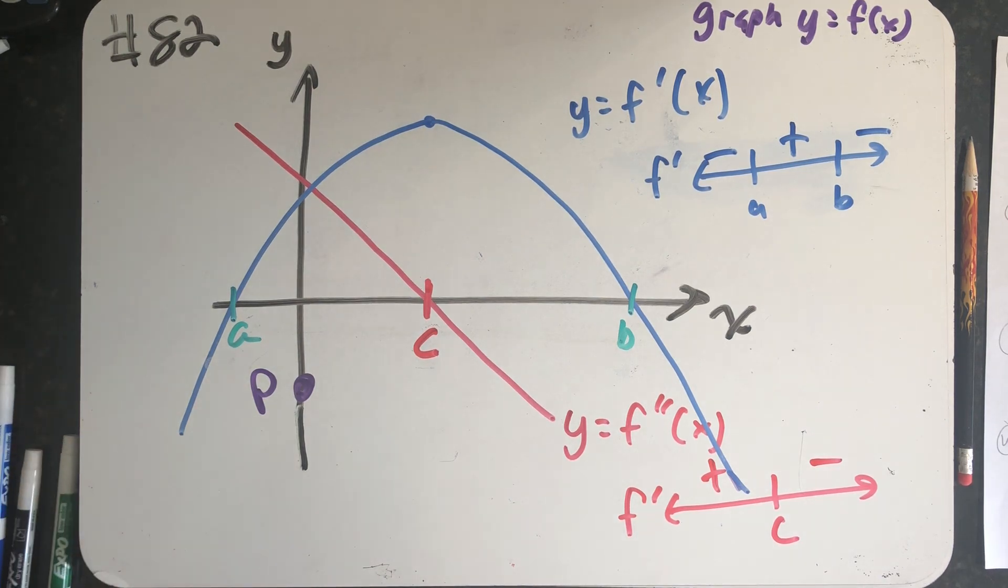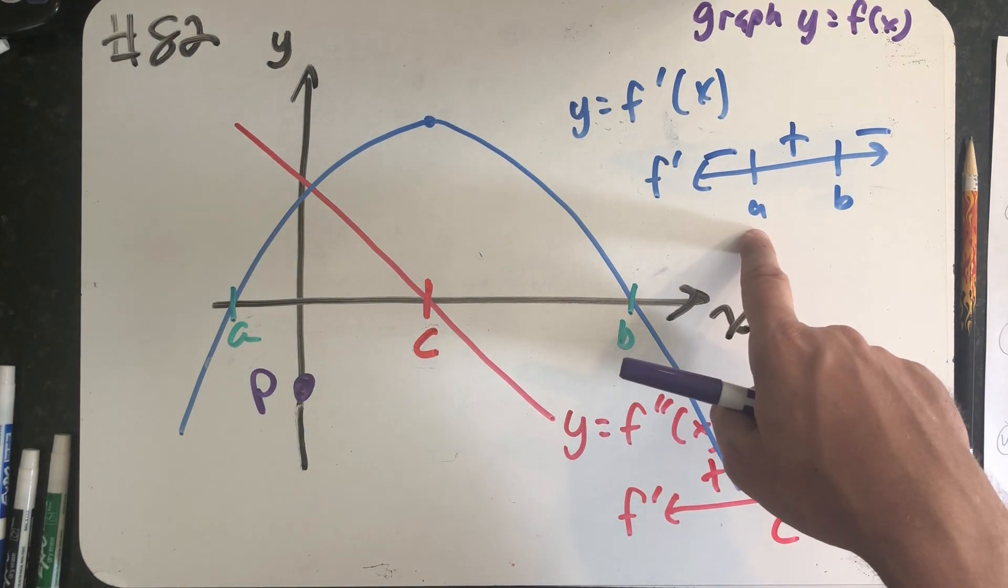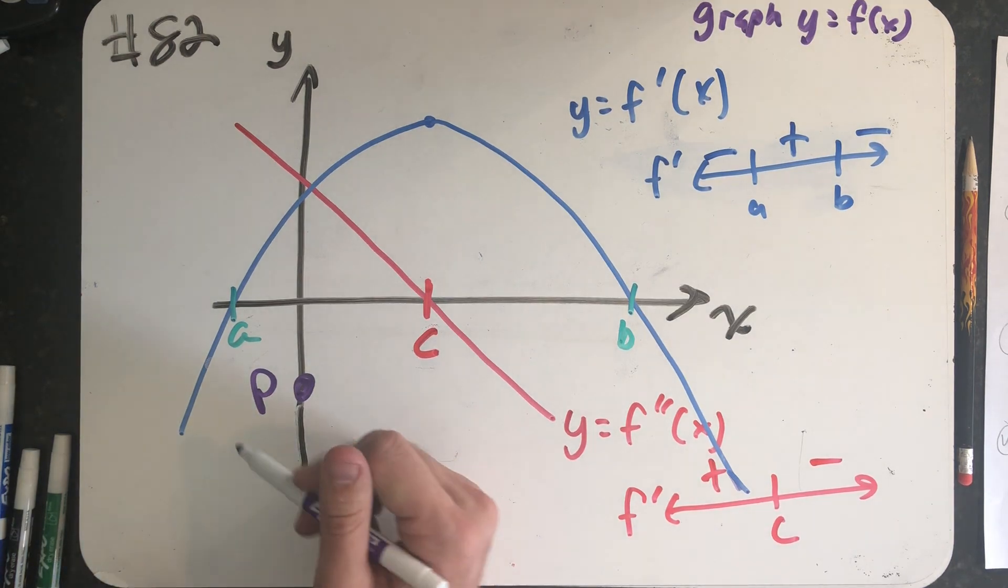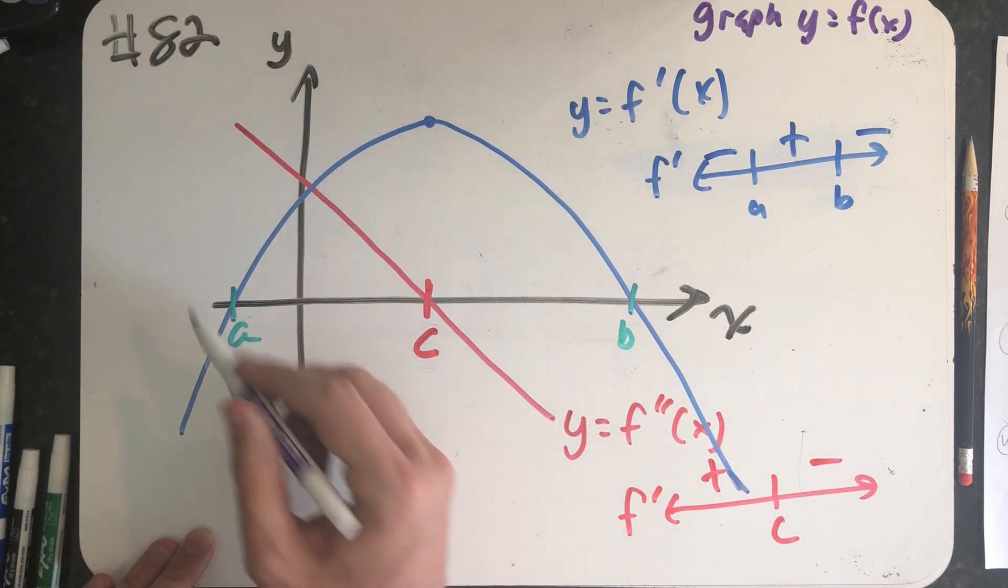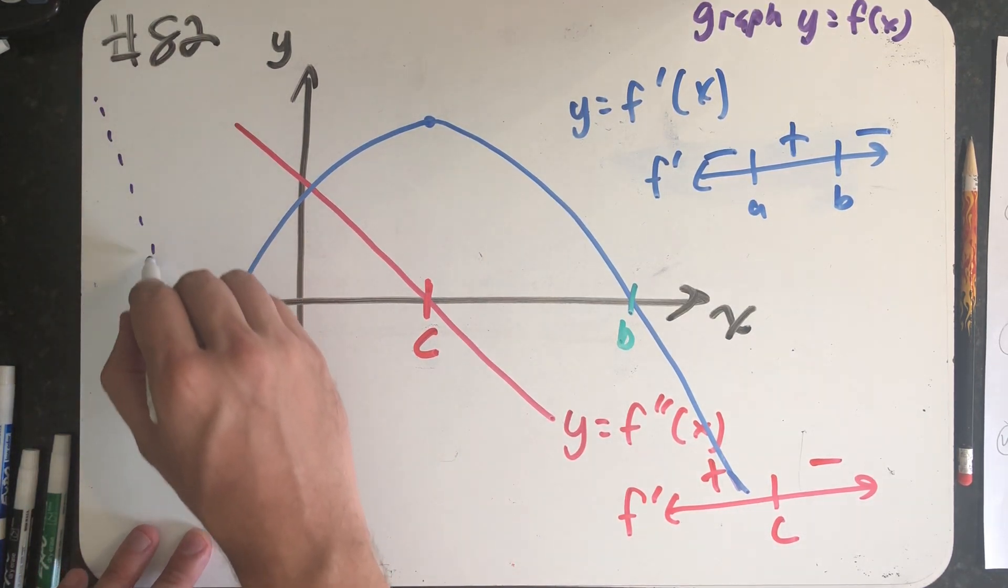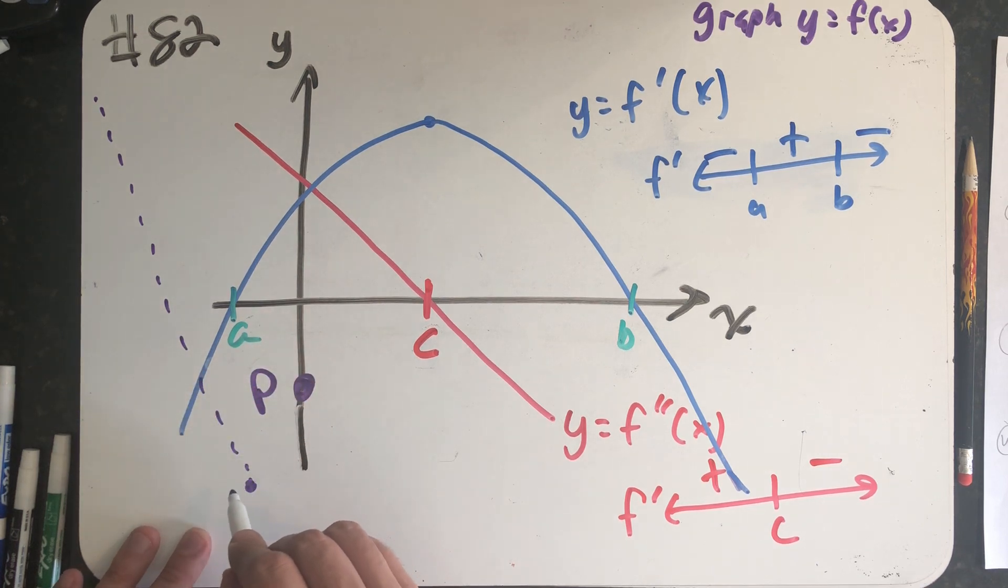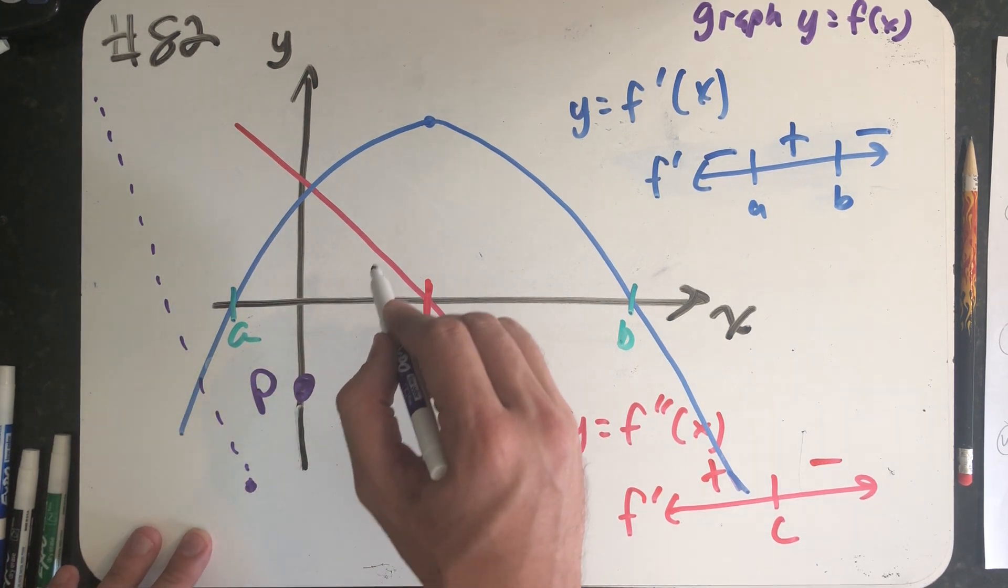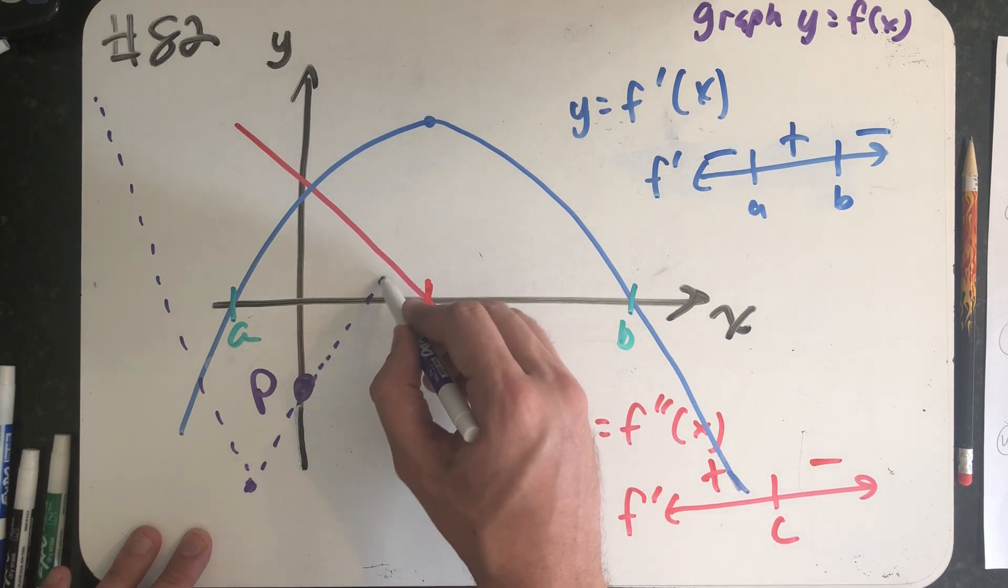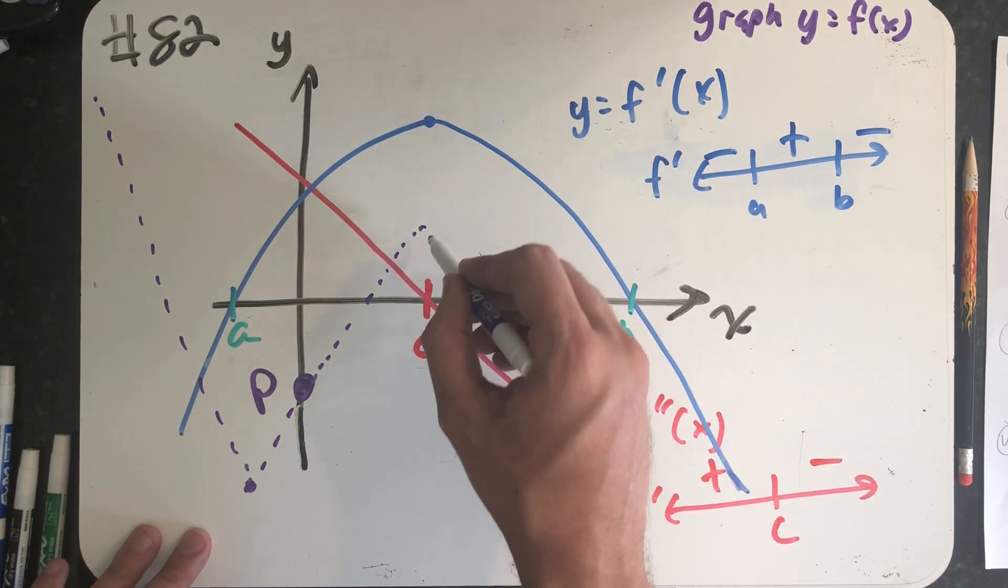So let's see if I can sketch the graph of y equals f of x. Let's just think about it in the most boring way. I have to decrease until I get to a and then go through the point p. So I think my graph of f of x will have to decrease until I get to something here so that when I start to increase, I can go through the point p. So then I increase and I go through the point p and I increase all the way to b.